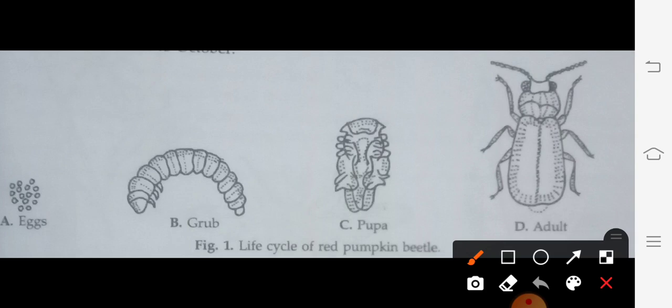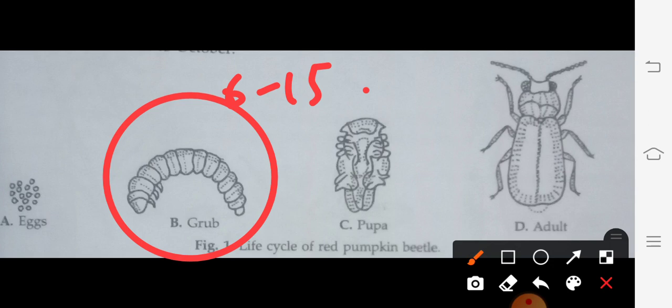The next stage is the grub. In the life cycle of beetles, the grub is the intermediate stage. The grub hatches 6 to 15 days after incubation. They hatch out from eggs. After 6 to 15 days, the grub hatches into a creamy yellow colored grub.